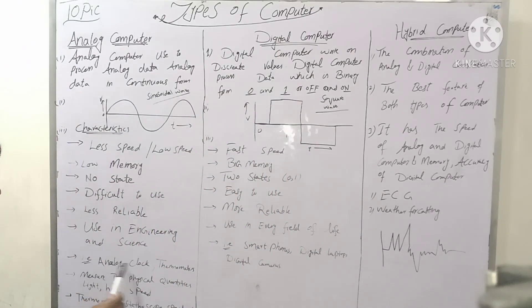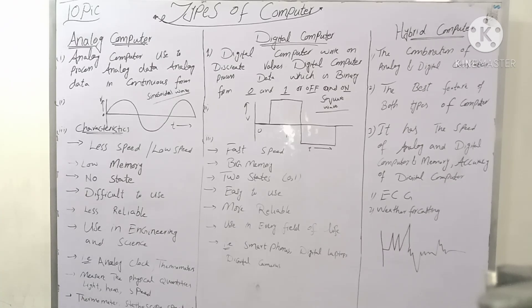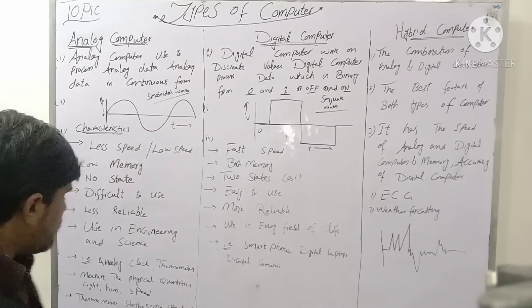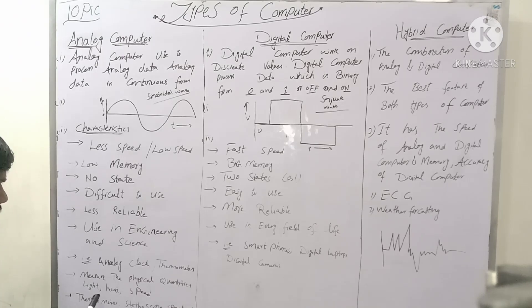Examples of analog computers include analog clocks, thermometers, and speedometers. These devices are used to measure physical quantities.